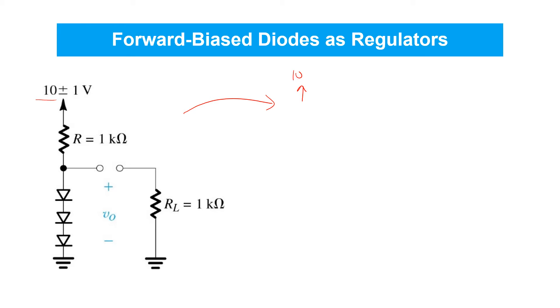We can analyze for the operating point Q with a constant forward voltage drop model. The three 0.7 volt drops result in a constant voltage drop of 2.1 volts, and then we can solve for the resulting drain current. It's the 7.9 volt drop across the resistor with a value of 1 kilo ohm, giving rise to 7.9 milliamps of current.